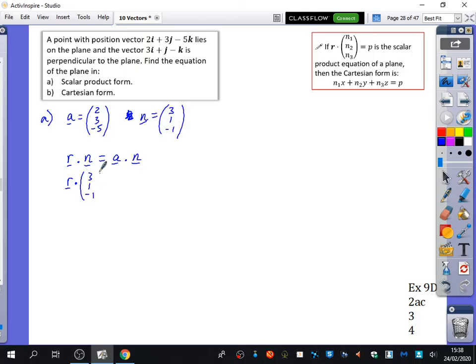For A we can clearly see that the position vector on the plane is 2, 3, minus 5 and the vector that it's normal to is 3, 1, minus 1. So we're going to just do R dot N equals a position on the plane dotted with N. So R dot 3, 1, minus 1 equals 2, 3, minus 5 dotted with 3, 1, minus 1. And what do they dot to give? 14. So there's the scalar product form.